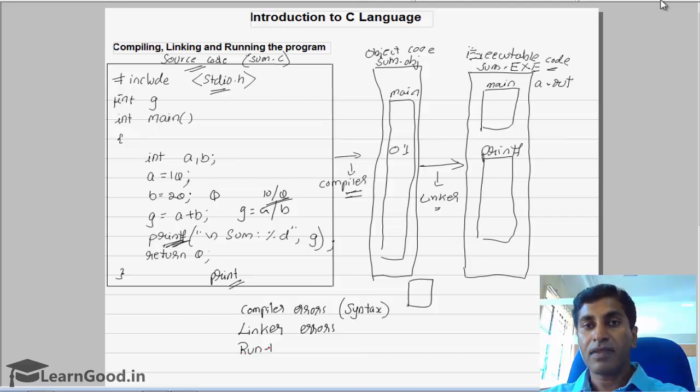These are the three types. Now there's one more possible error—that is a logical error. If you actually want to find the sum, you have to give g equals a plus b. By mistake, assume that instead of giving g equals a plus b in a program, you might have given g equals a minus b.